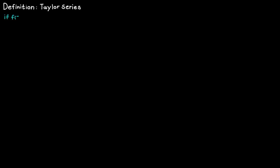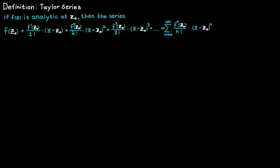The definition states that if a function is analytic at some point c naught, then the following series — which includes all the derivatives of a function of order zero to infinity — is called the Taylor series for a function around the point c naught.